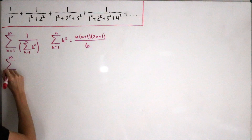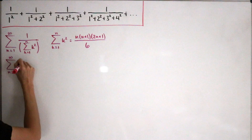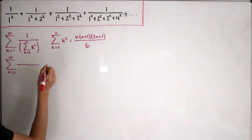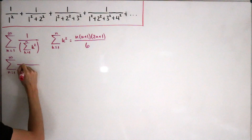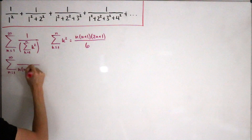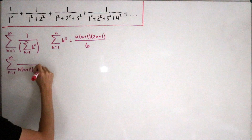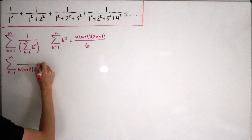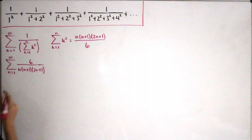With index starting at n=1, I'll write the denominator first: we have n(n+1)(2n+1) in the denominator and 6 in the numerator.